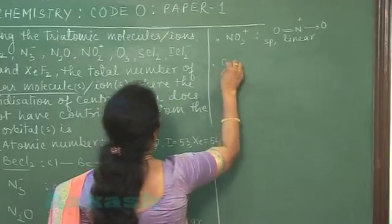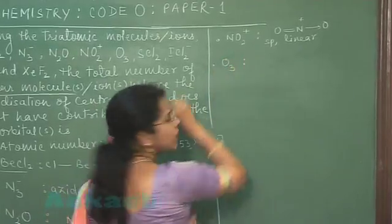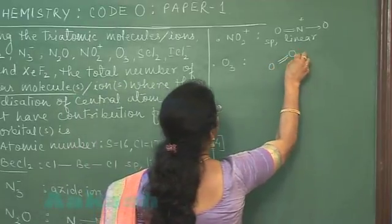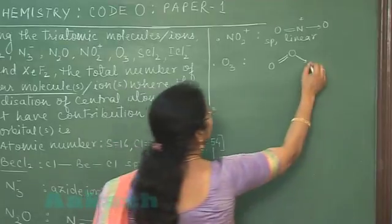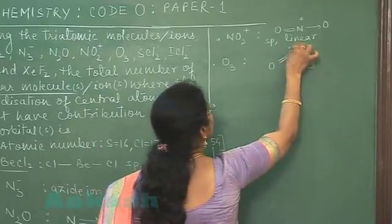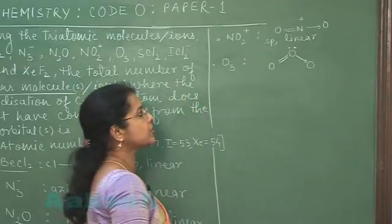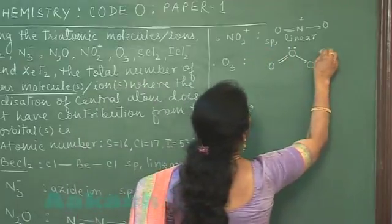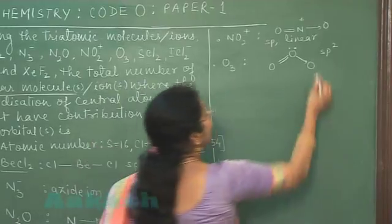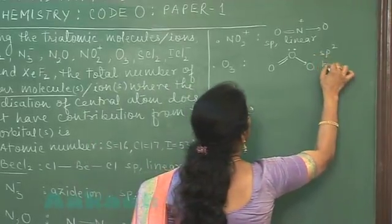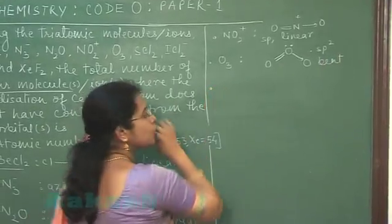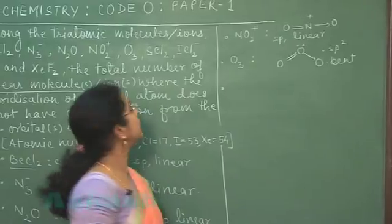The next one is ozone, a triatomic molecule. Oxygen is bonded to another oxygen through a double bond and one more oxygen through a coordinate bond. A lone pair is present on the central atom. So the hybridization is sp2 and the molecular shape is bent, with trigonal planar geometry.